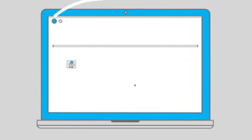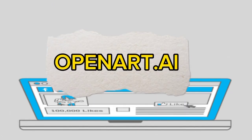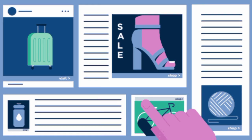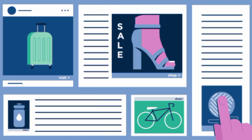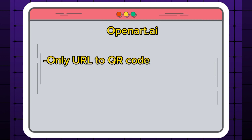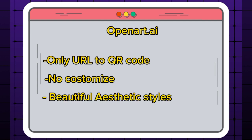The first AI tool we are going to use is an online QR code generator called OpenArt.io. This tool can create artistic QR codes from any URL, but it has some limitations compared to the other two tools. It can only generate QR codes for URLs and does not allow us to customize the design parameters. However, it has a variety of styles to choose from and it produces the most aesthetic QR codes. It is also very easy to use.